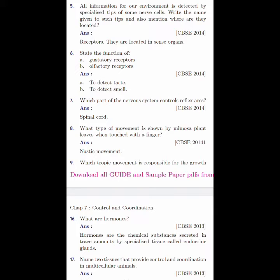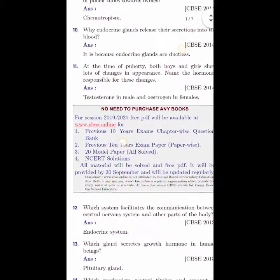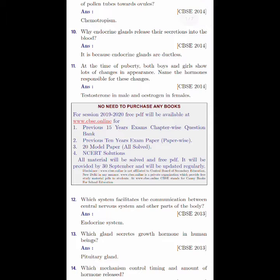Which part of the nervous system controls reflex arcs? That is spinal cord. What type of movement is shown by mimosa plant leaves when touched with a finger? That is nastic movements. Which tropic movement is responsible for the growth of pollen tubes towards ovules? This question was asked in 2014. That is chemotropism.